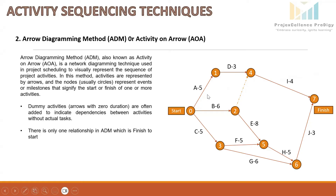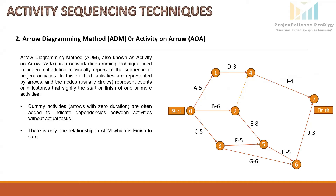In ADM, each arrow represents a specific task or activity that must be completed. The length of the arrow does not represent the duration — it is only a graphical representation. The node at the tail of the arrow represents the starting event and the node at the head represents the finishing event. ADM sometimes requires dummy activities, represented by a dashed arrow, which do not consume time or resources and are used to maintain clarity when there are multiple dependencies. The biggest limitation of ADM is that it allows only one type of logical relationship — Finish to Start — with no SS, FF, or SF.